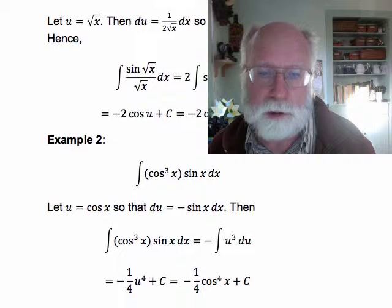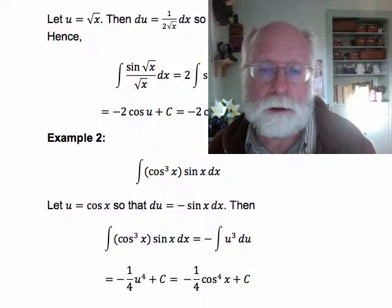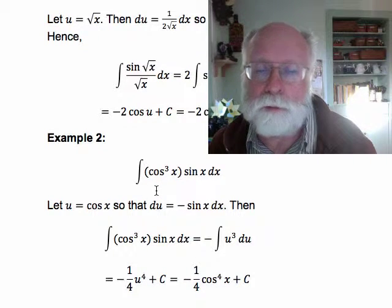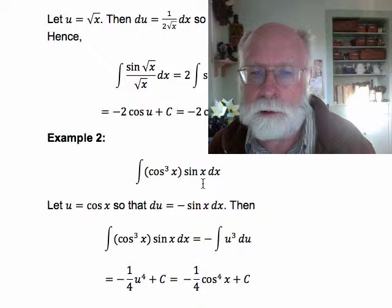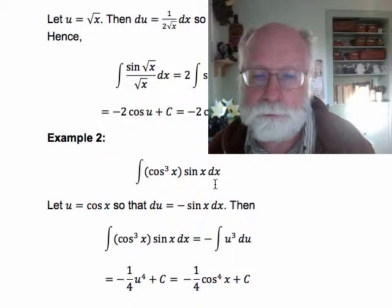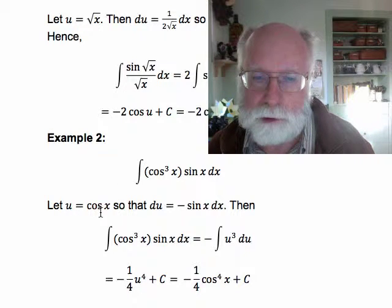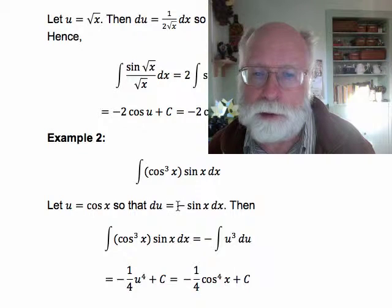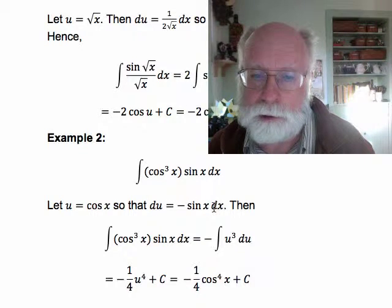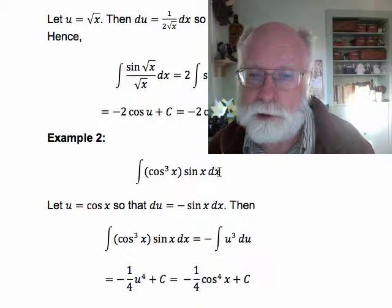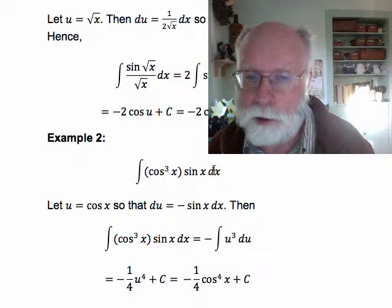Our second example is the integral of cos cubed x times sine x dx. Now here the substitution that works is to let u equal cos x, because then du is minus sin x dx and we have sin x dx sitting in our integrand.